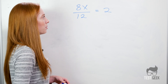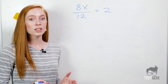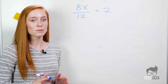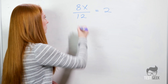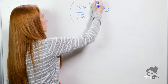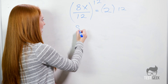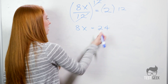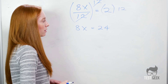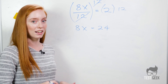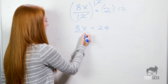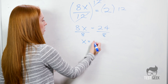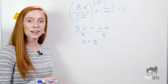8x over 12 equals 2. We're trying to solve for x here. The first thing we want to do is get rid of this 12, and the easiest way to do that is multiply both sides by 12. So we get 8x — because these two cancel — equals 24. Then we divide by 8 to get x by itself, and we get x equals 3. And we have our answer.